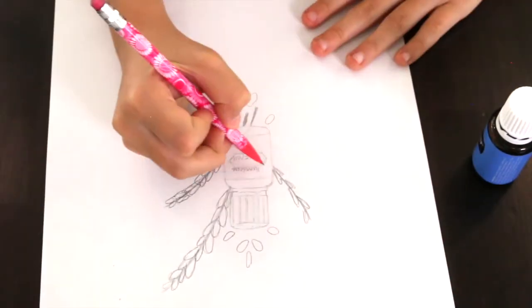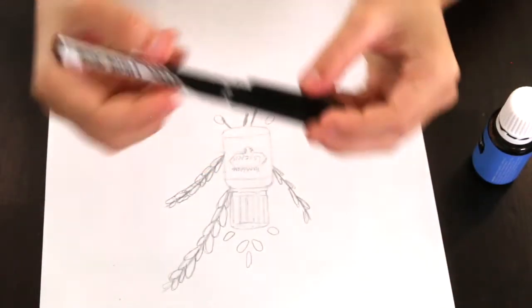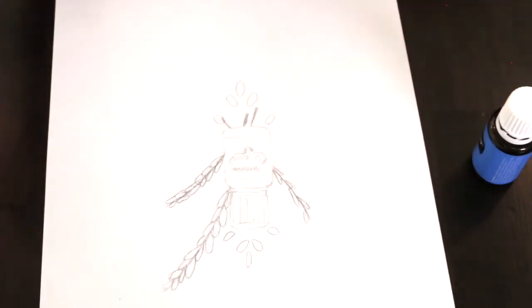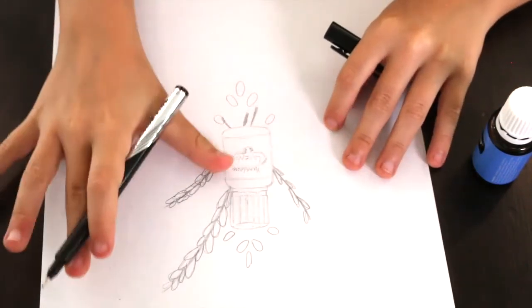Once you're done with that, you're basically all done. You just need to mark it down with your felt tip. Make sure all the lines are smooth and ready to color.